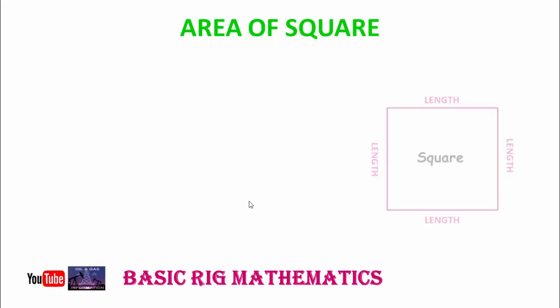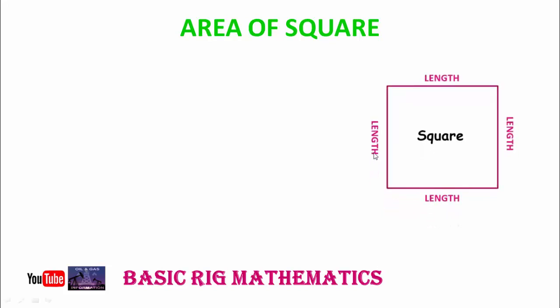Area of square. This is the square. As you see in the picture, a square has four equal lengths: one, two, three, and fourth one.